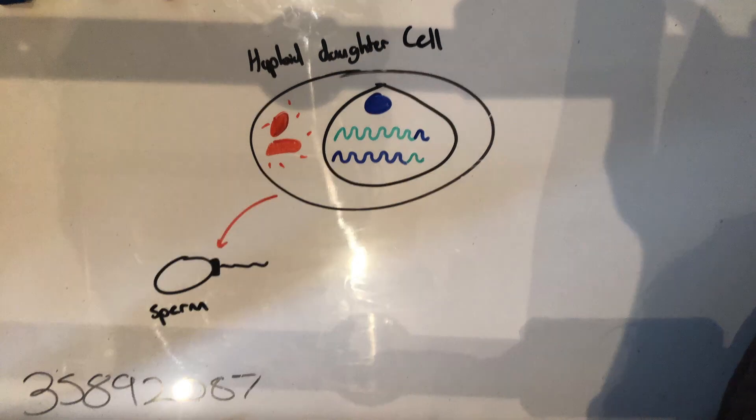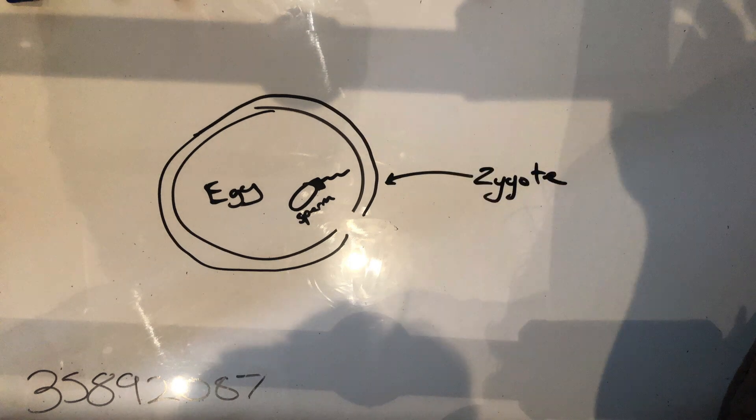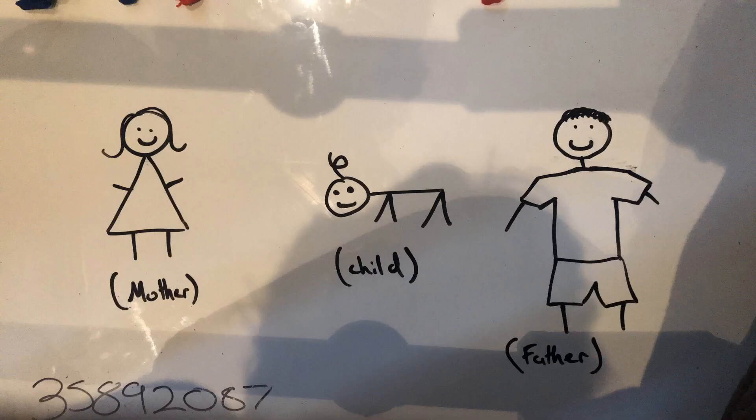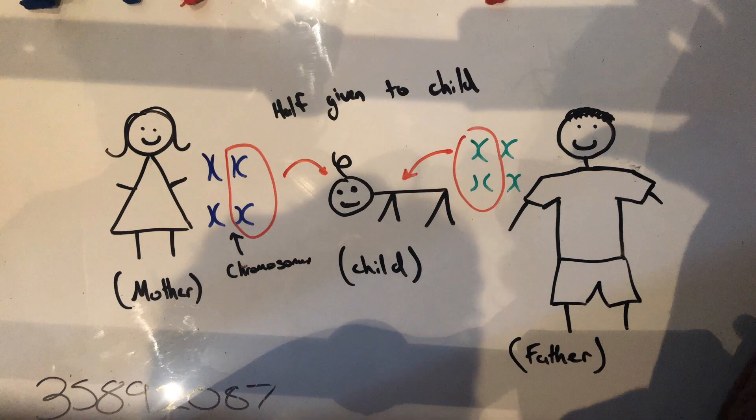These haploid daughter cells specialize into gametes, which can be either sperm or eggs that contain a single allele. After fertilization, these cells form a zygote, which then forms a child. The child receives half maternal and half paternal chromosomes. This splitting of chromosomes leads to genetic diversity within the child.